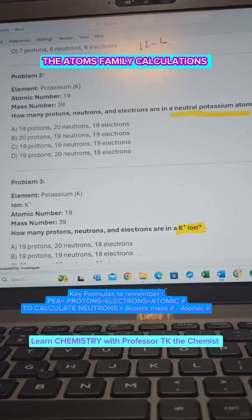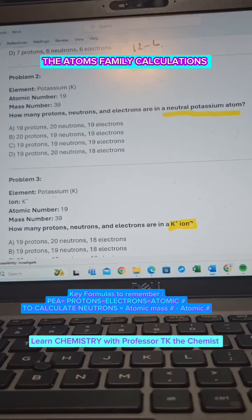Okay, so I'm going to explain to you how to do number two so that you'll know how to do number three. Remember, electrons is based on the atomic number. The atomic number will tell you how many electrons you have. For number two, if the atomic number for potassium is 19, guess what else is going to be 19? Your protons and your electrons.